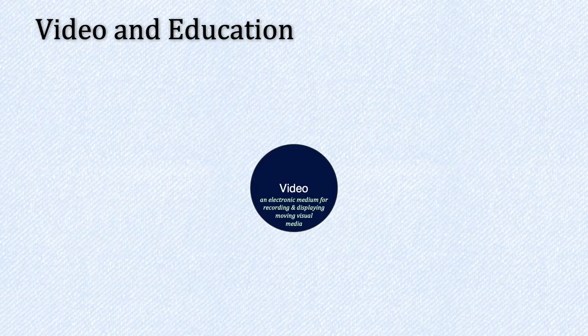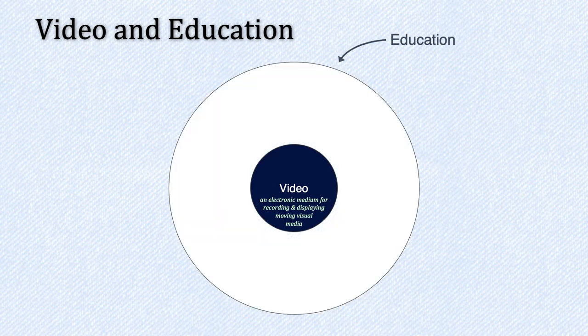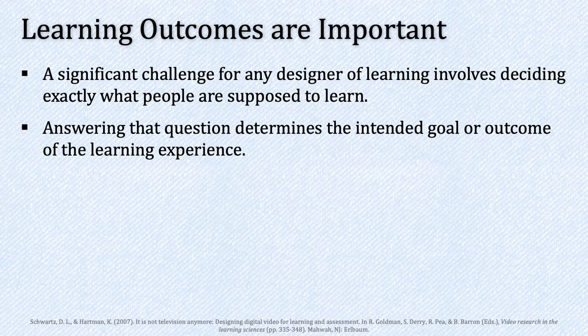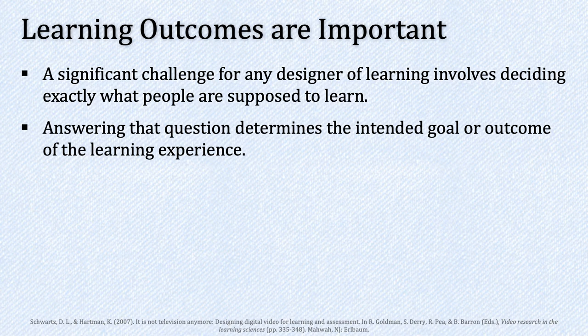For the past couple of weeks we've been focused on the production of our video. Now I want to bring us back out to this graphic — the idea that we're studying video in the context of education. With that I want to turn to the Schwartz and Hartman article, who really emphasized that learning outcomes are important. In that article they point out that a significant challenge for any designer of learning involves deciding exactly what people are supposed to learn. They argue that answering that question determines the intended goal or outcome of the learning experience.